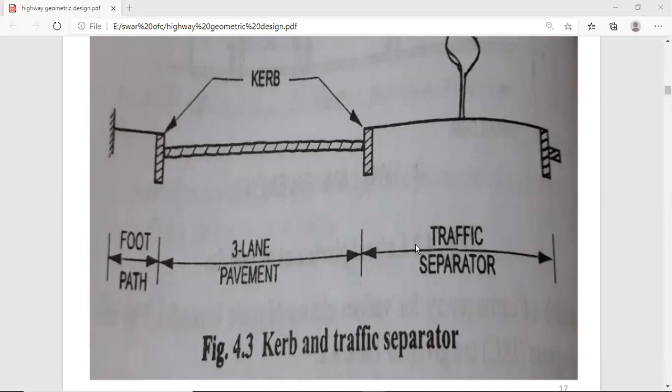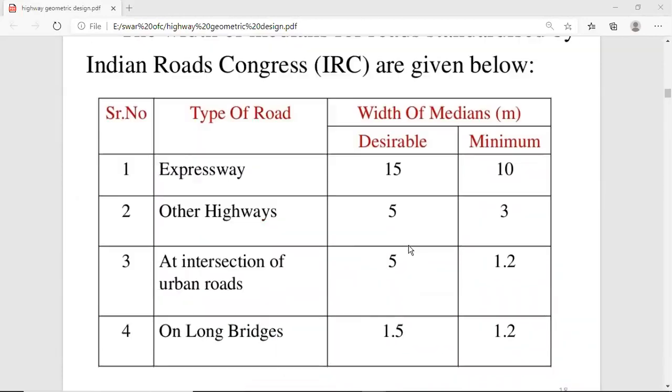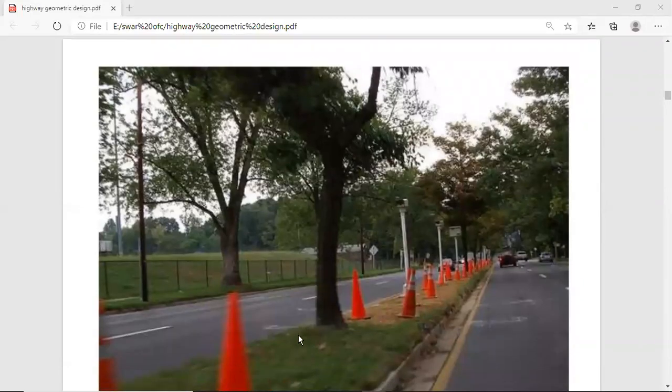This is the footpath and there are lines. The width of the median is fixed by IRC. For expressway, the width of the median will be 15 meters. For highways, 10 meters. Other highways, 5 or 3 meters. For intersection of urban roads, 5 or 1.2 meters. For long bridges, 1.5 and 1.2 meters. The median area or traffic separator divides the two ways and keeps them separate.